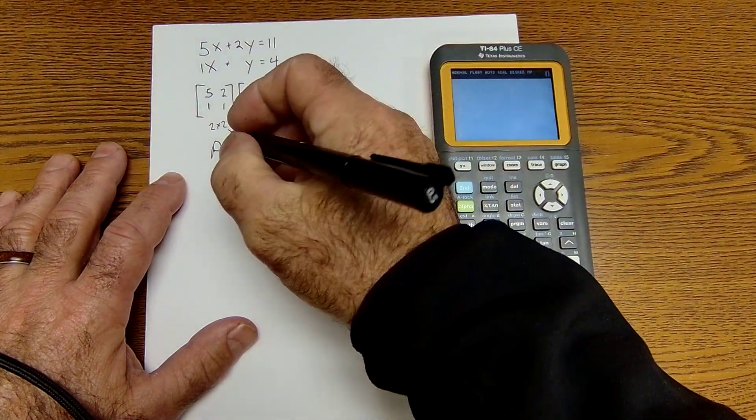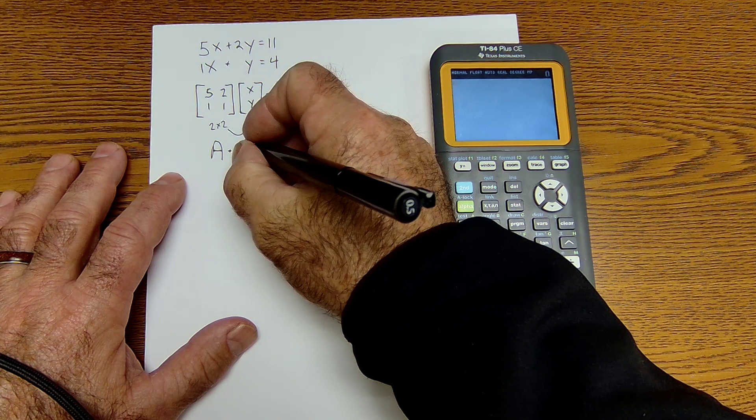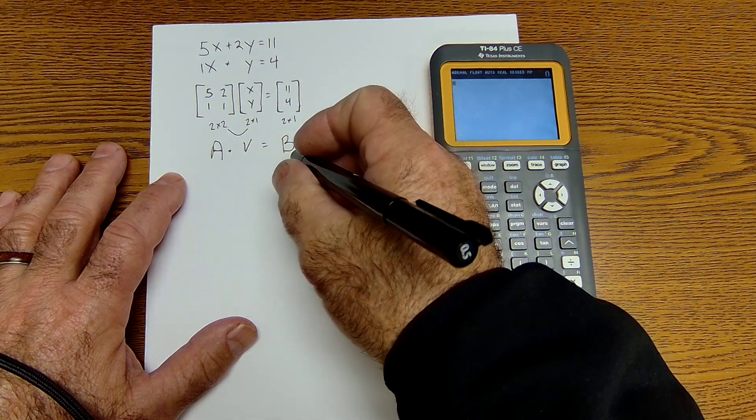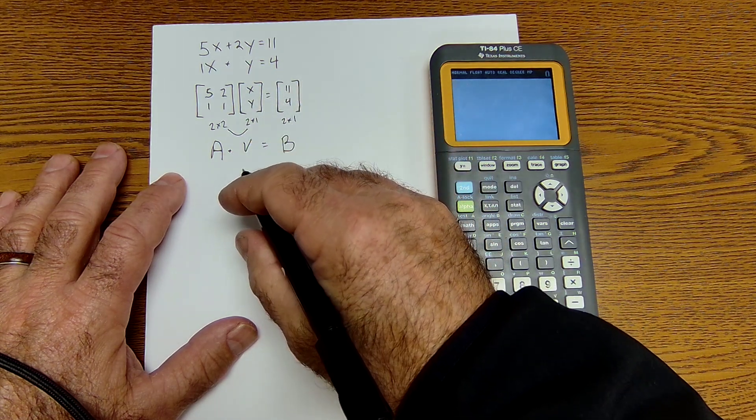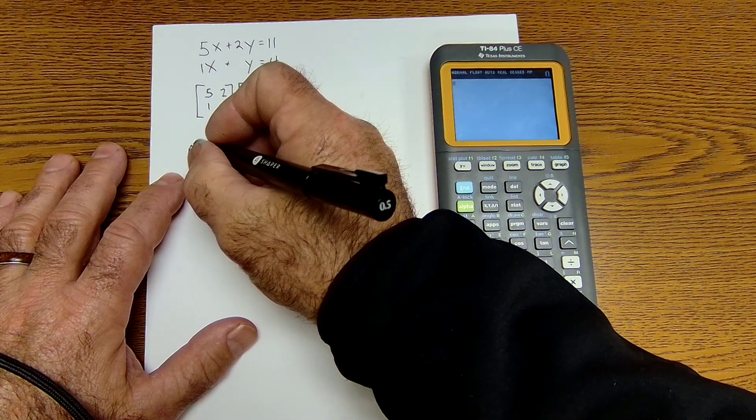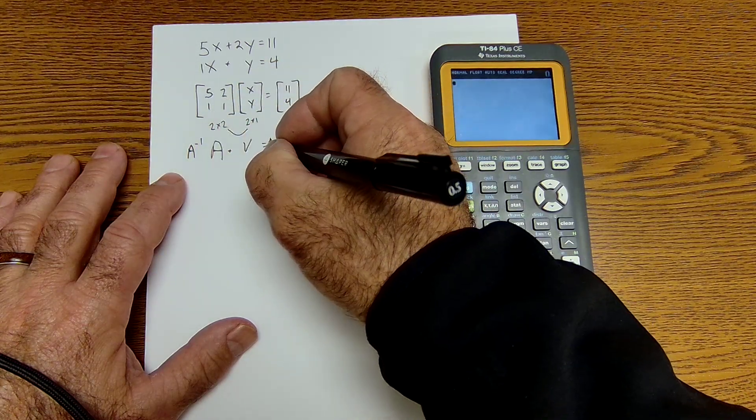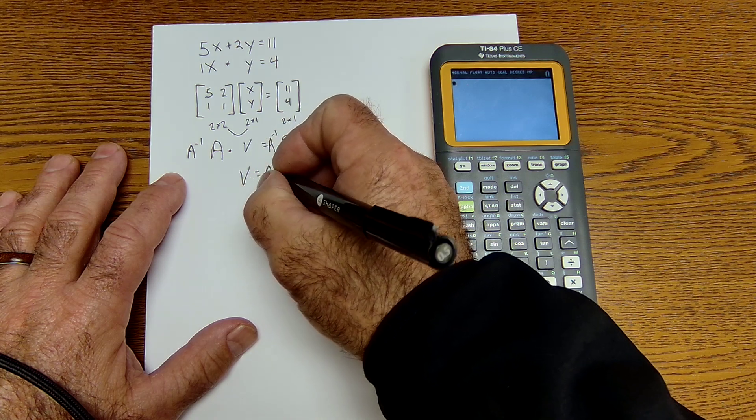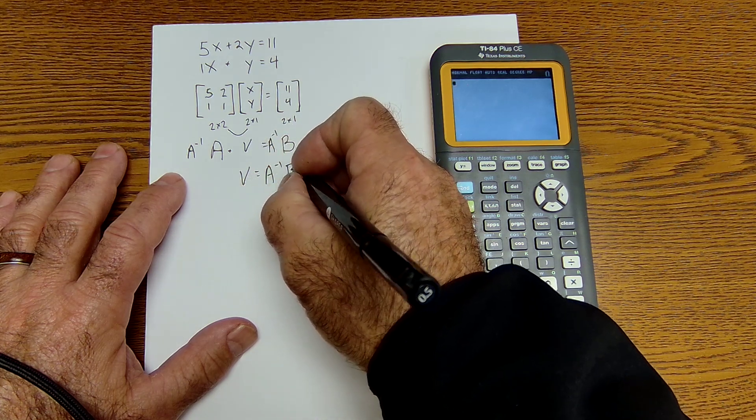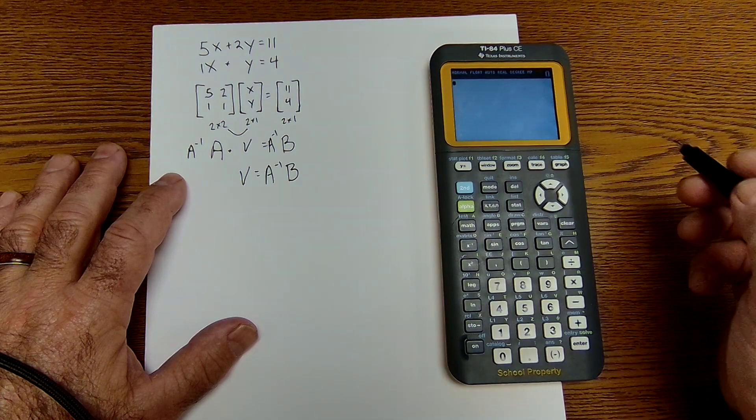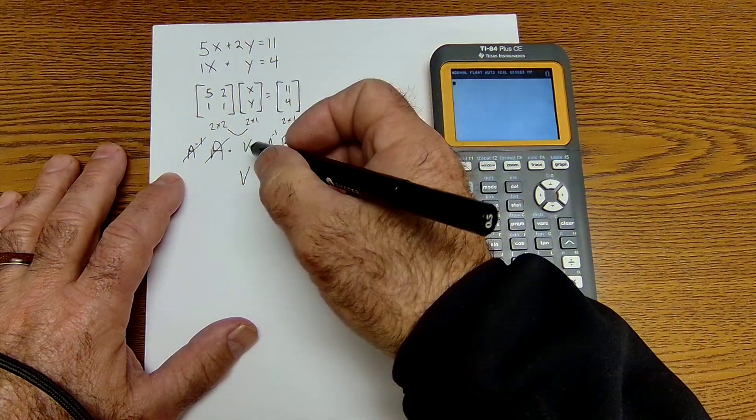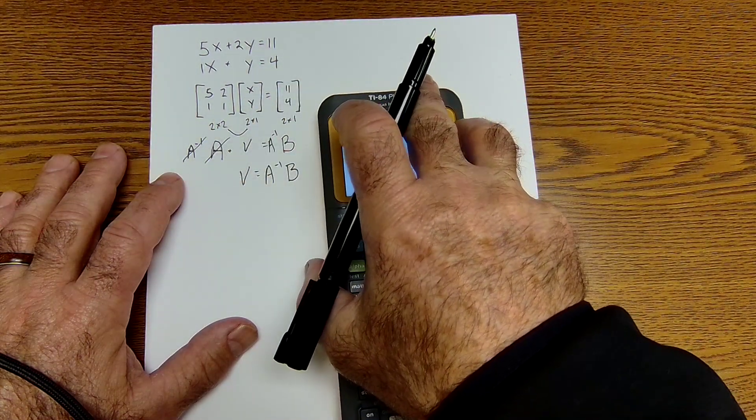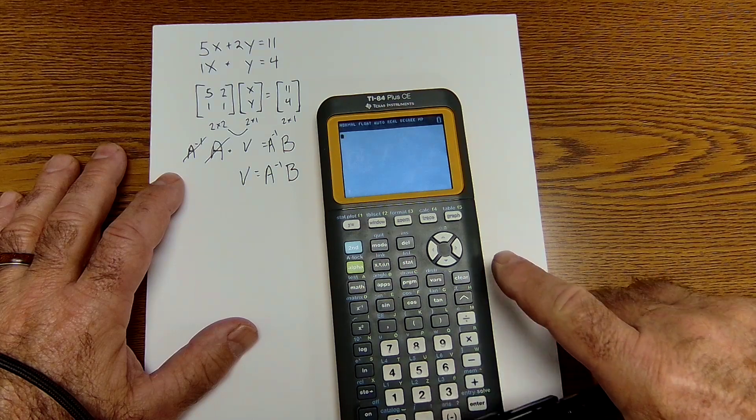What I have here is I have matrix A times V, variable matrix, equals B. If I want to solve for my variables V, I can multiply both sides by the inverse. And I can see my variable matrix would be equal to my inverse matrix of A times B. These will cancel, giving me my variable by itself. So I could do that pretty easily on the calculator.